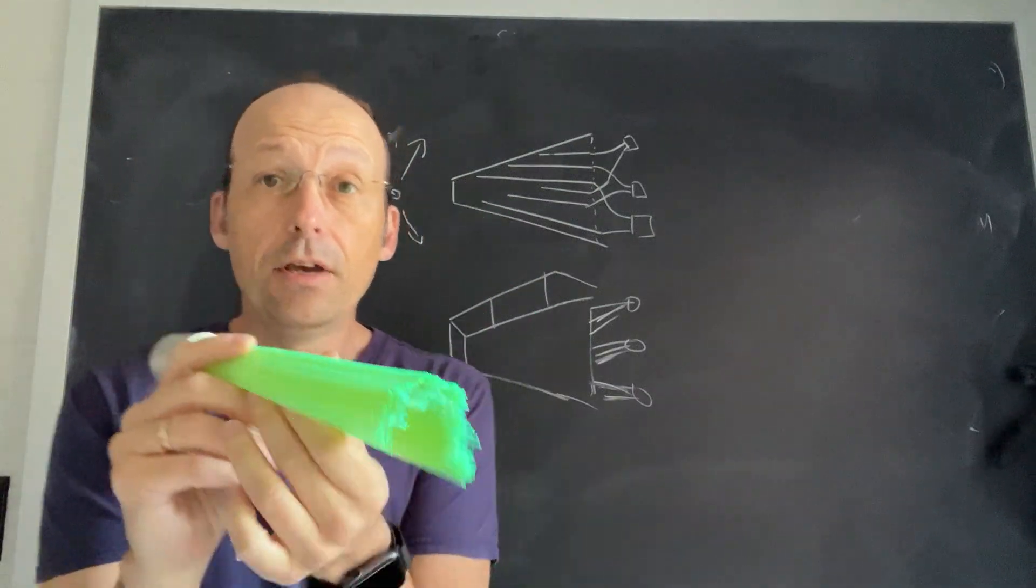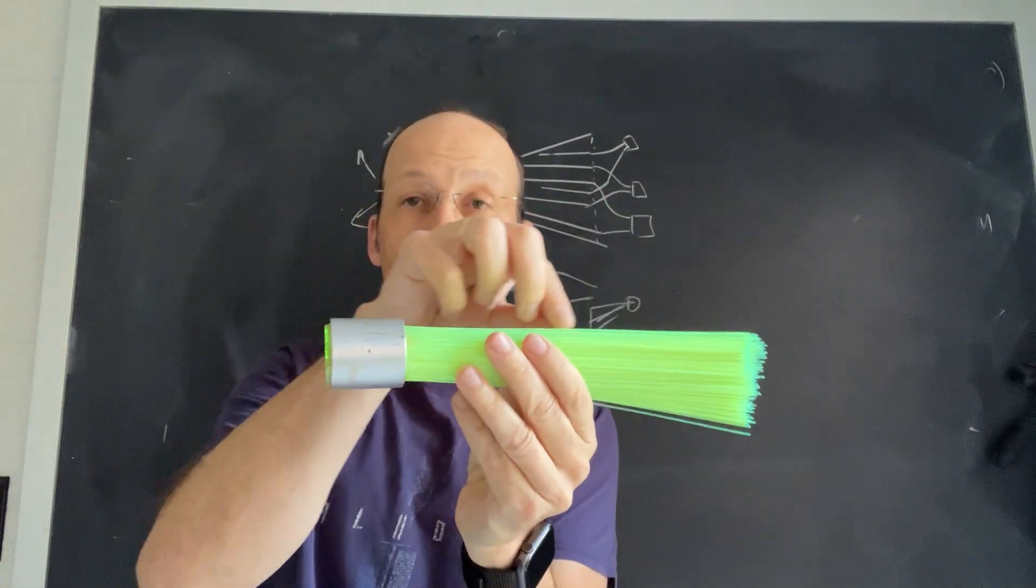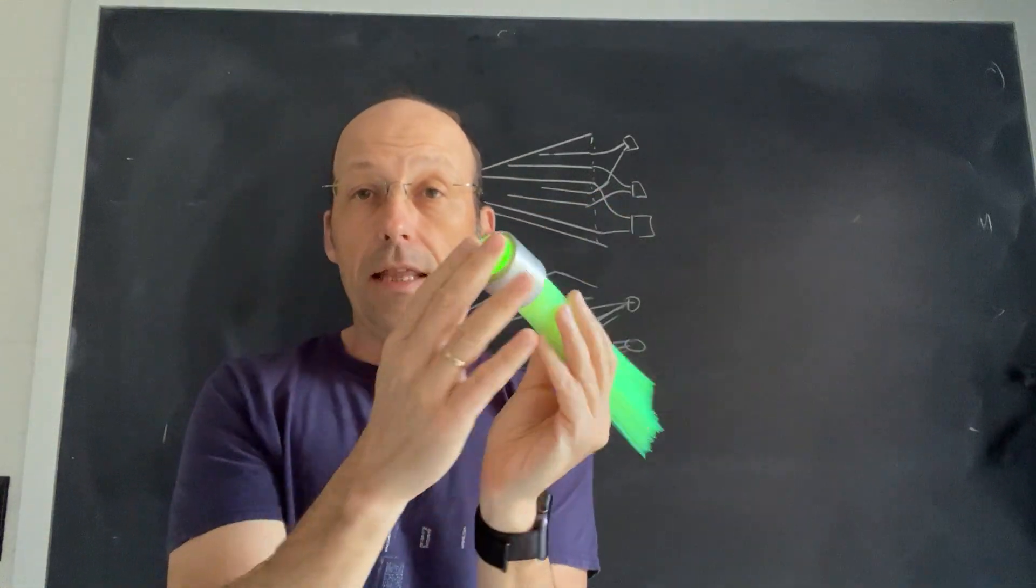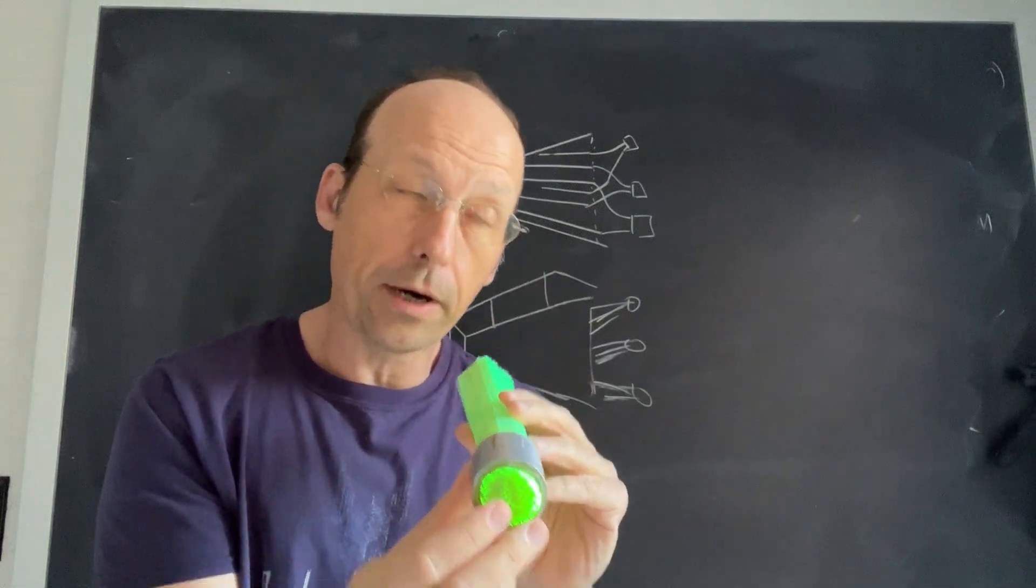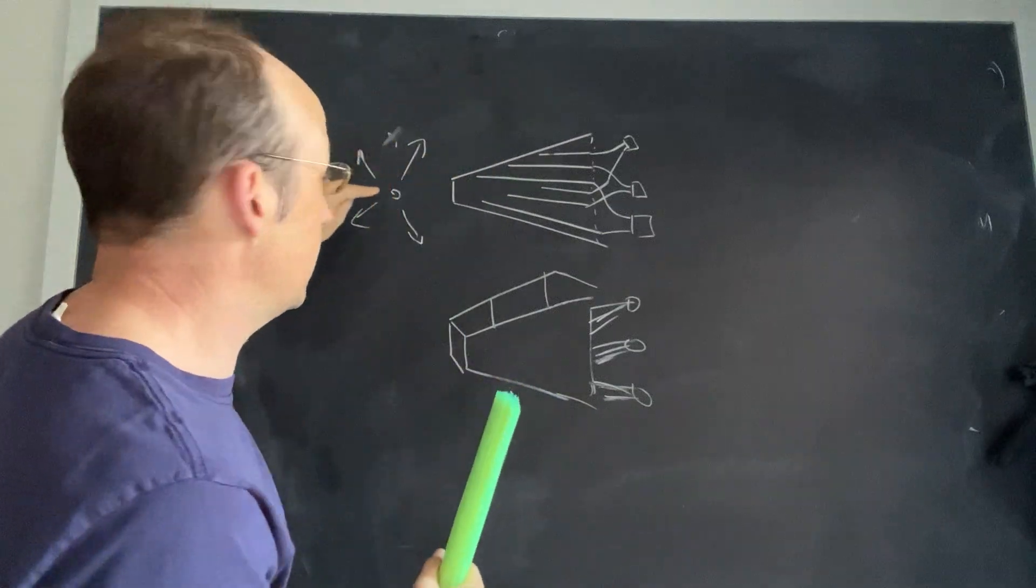These are scintillating fiber optics. That means when a charged particle comes and hits it, it creates a little bit of light, and that light travels down to the end of the tube. This was connected to a photomultiplier tube that would basically measure the amount of light it gets.